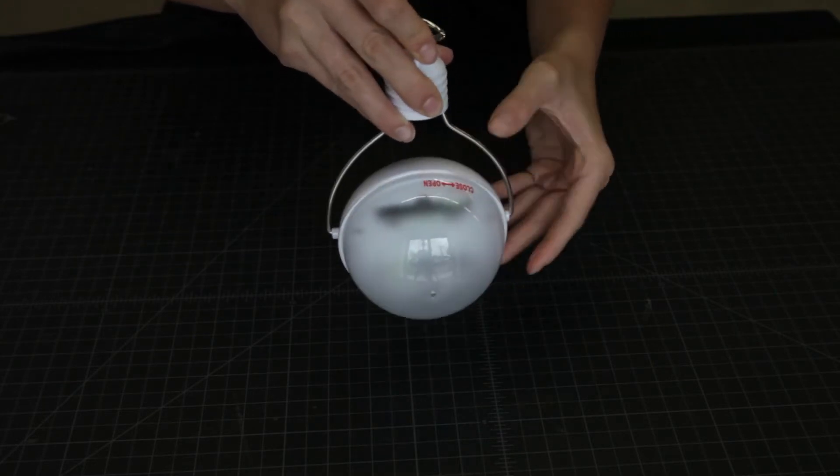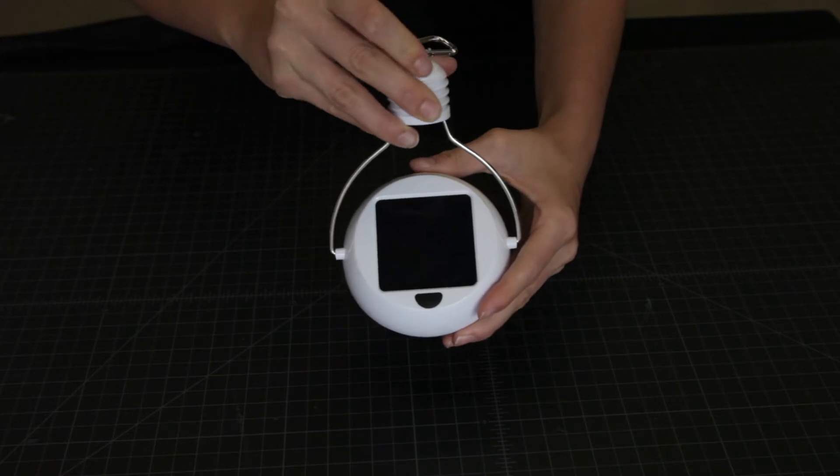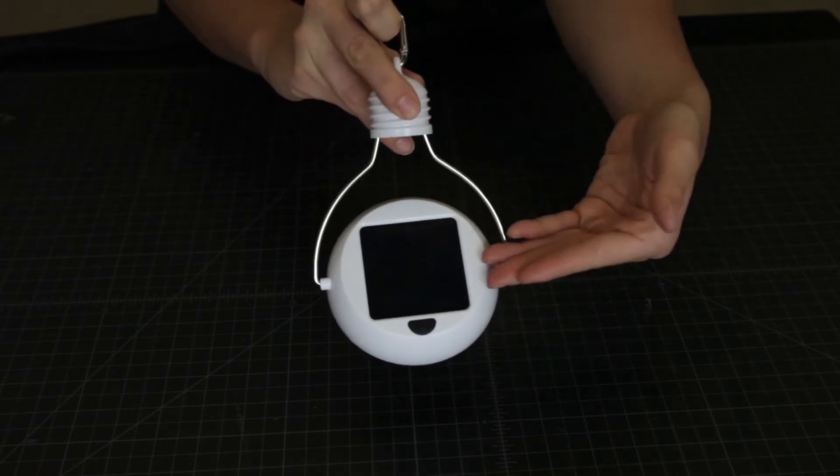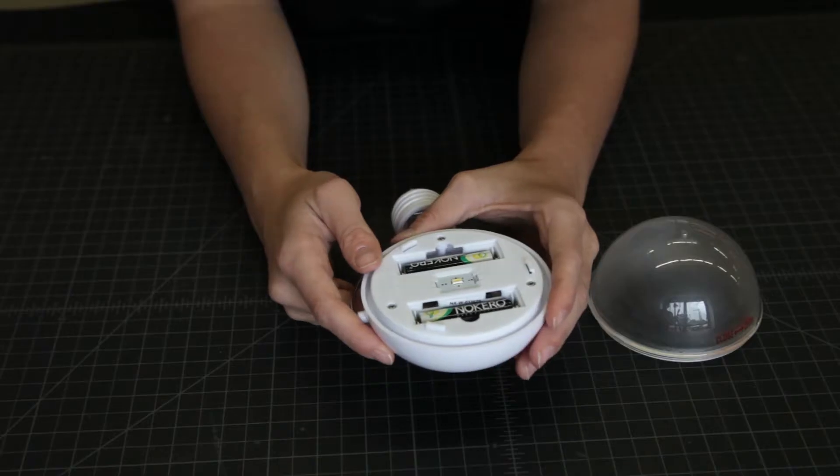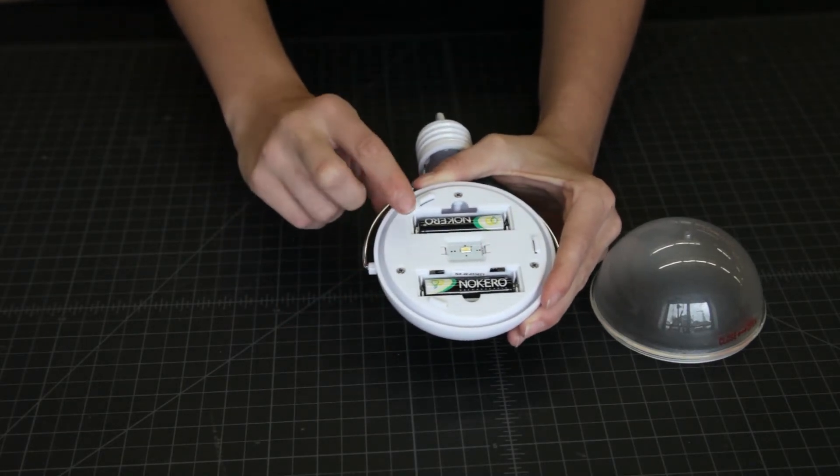Nokero's iconic design has a rotatable feature that allows the solar panel to be aimed at the sun for charging. Sunlight is captured by this solar panel and converted into electricity stored in two rechargeable AA-sized batteries.